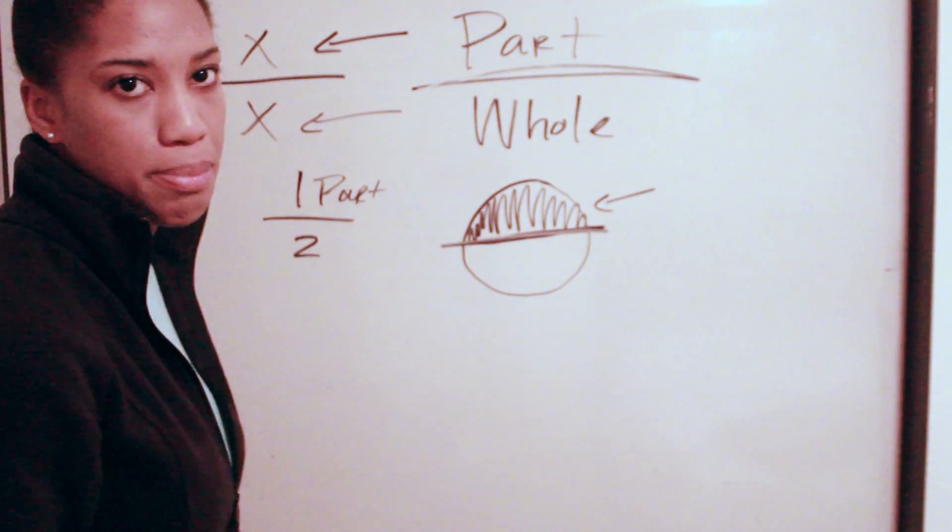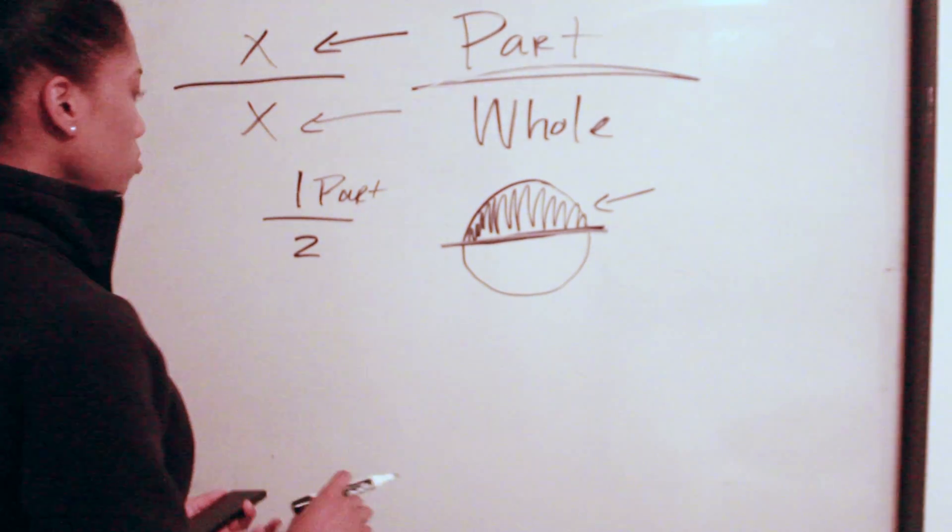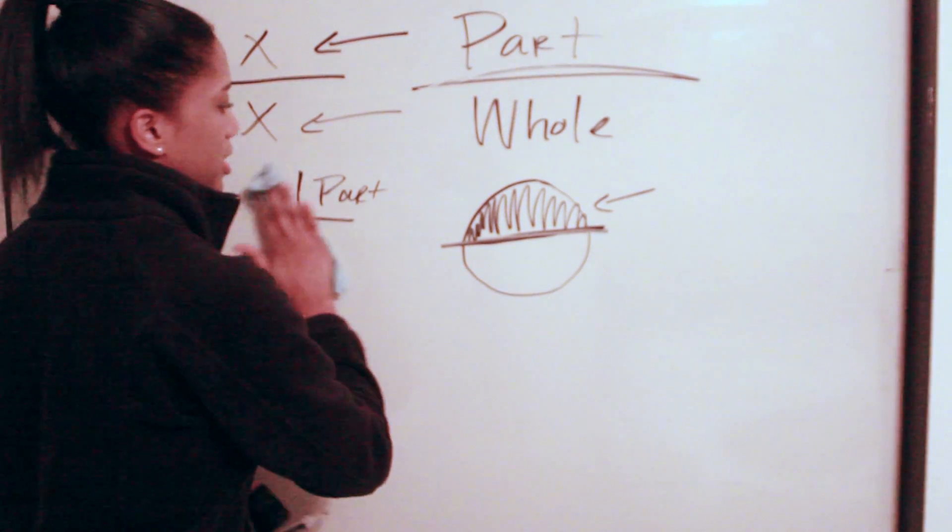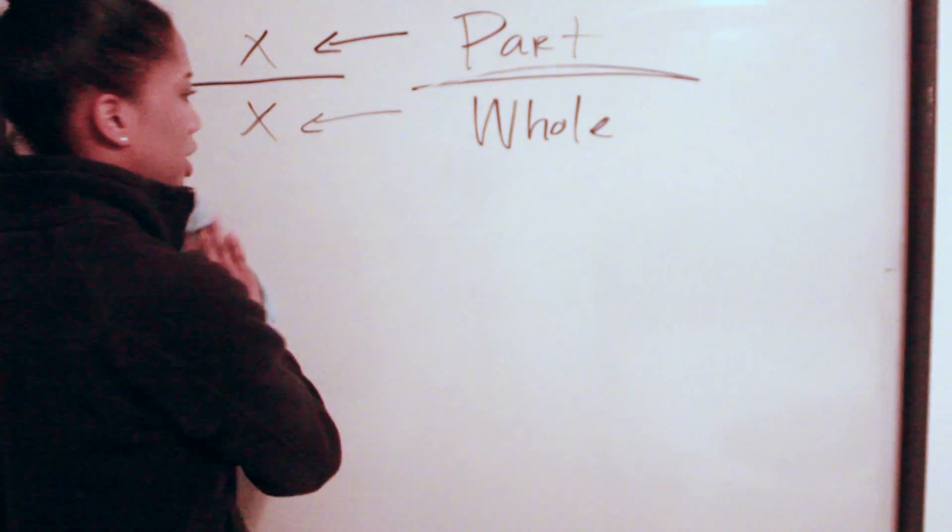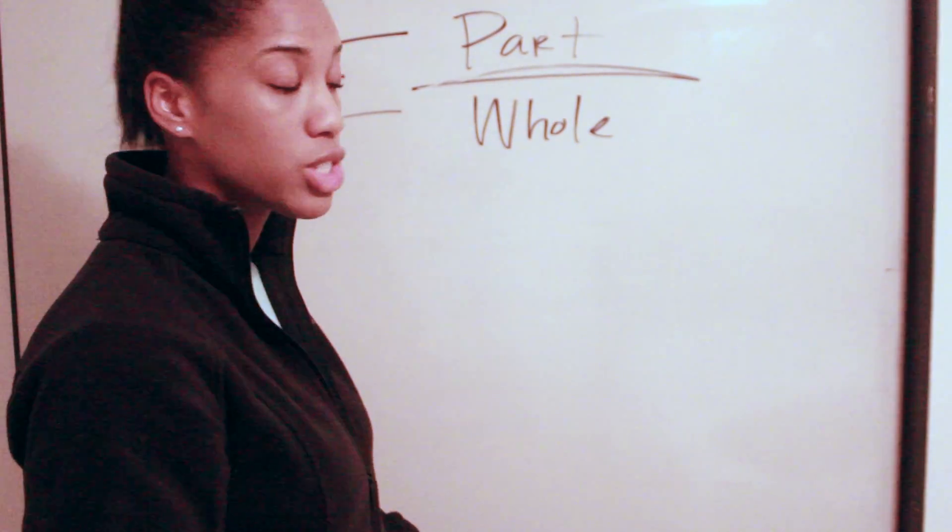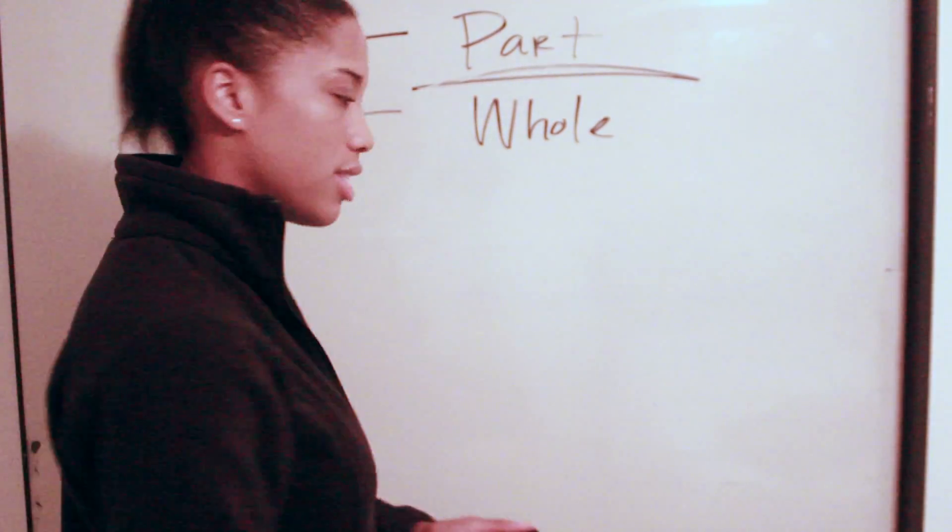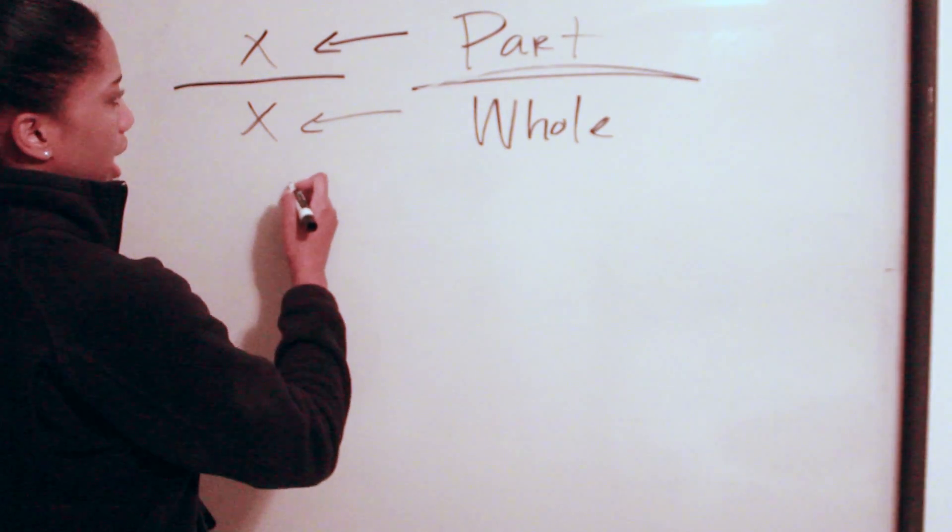So that would give us - if you were told to divide an amoxicillin pill into one half, obviously this is the amount that would be given to that patient. Let's just do one more example to make sure you grasp the concept of fractions in relation to pharmacy.